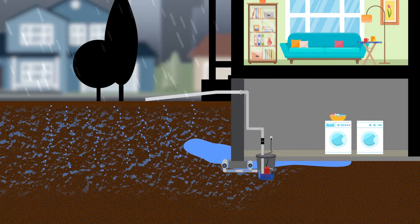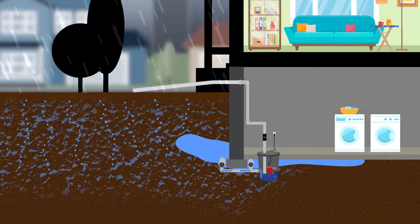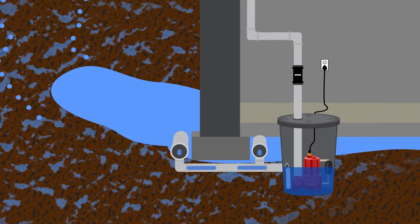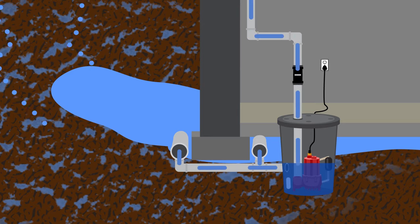The sump basin sits under your house and collects this water. Once the basin collects enough water, the float switch triggers and the pump activates.